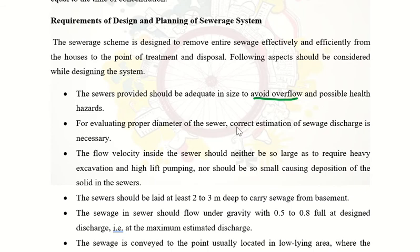The correct estimation of sewage is very important so that a proper diameter of sewerage can be selected. If we select the size, we should automatically know what the flow velocity inside is. We should ensure there is a minimum cleansing velocity. Minimum cleansing velocity is important because the sewage will have some solids.